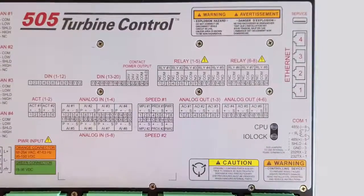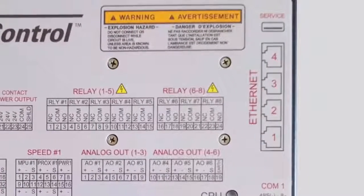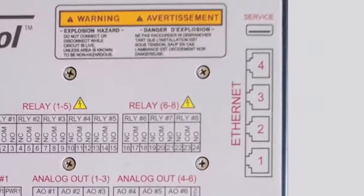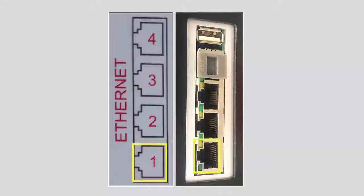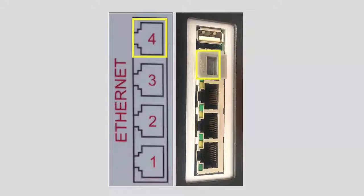The 505 controller has four physical Ethernet connections. Ethernet 1, Ethernet 2, and Ethernet 3 configurations refer to the unit's physical Ethernet connections. Ethernet 4 is reserved and is not configurable through the front panel.